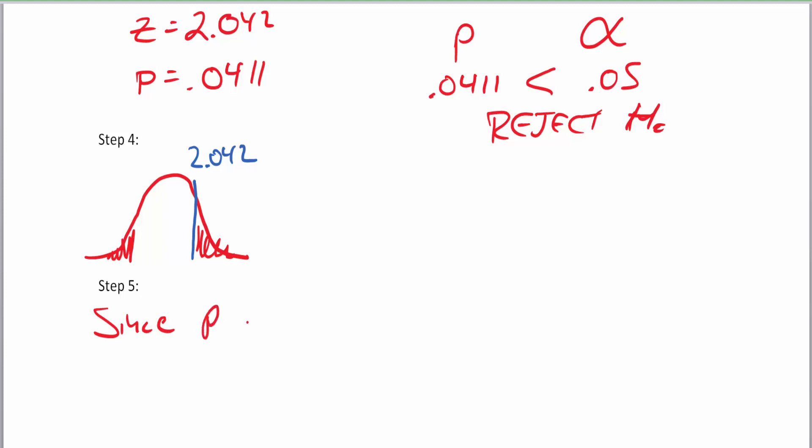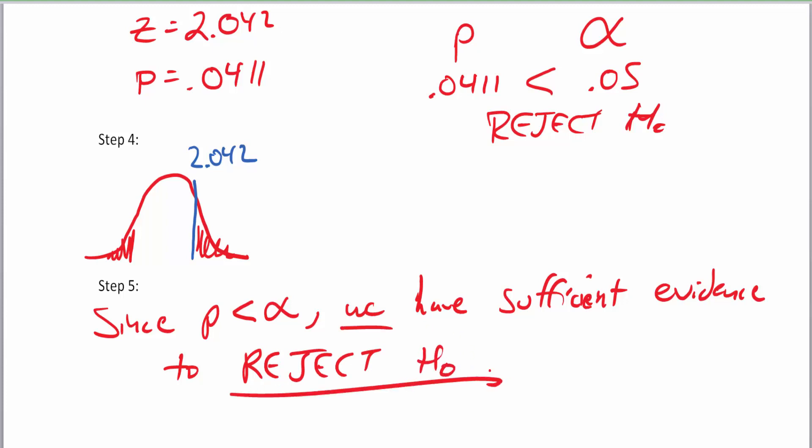And we're rejecting because our chance of getting this event was less than the chance of us making the mistake. So this was definitely a rare event to push us to reject the null hypothesis. Since our rare event was less than our chance of making a mistake, we have sufficient evidence to reject the null hypothesis. So we reject the null hypothesis.